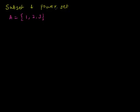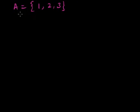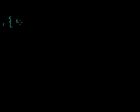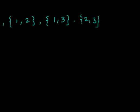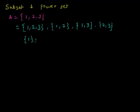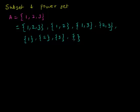Let's learn the difference between subset and power set. Suppose we have a set A which contains three elements: 1, 2, 3. All possible sets of this set A include the set itself, then sets containing two elements — 1 2, 1 3, 2 3 — then sets containing one element, and the null set. The null set is a set which doesn't contain any element.